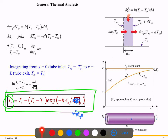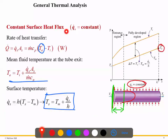In summary, there are two cases: constant surface heat flux and constant surface temperature. When it is constant surface temperature, use that formula to calculate the exit temperature. When it is constant heat flux, use the other formula. In an exam, read carefully to determine which boundary condition applies before selecting the correct formula. We will solve some problems next for better understanding.